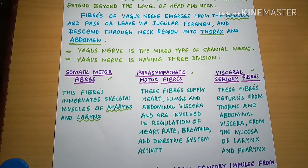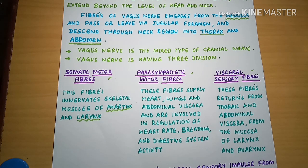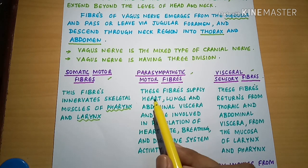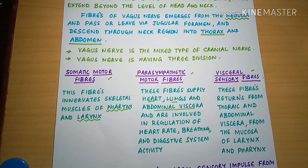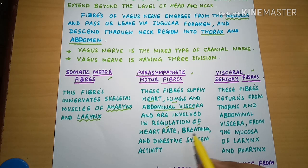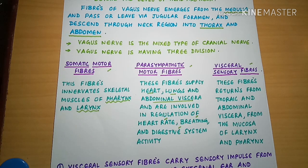The Parasympathetic Motor Fibre Division of the Vagus Nerve supplies the heart, lungs, and abdominal viscera, and is involved in regulation of heartbeat, breathing, and digestive system activity.